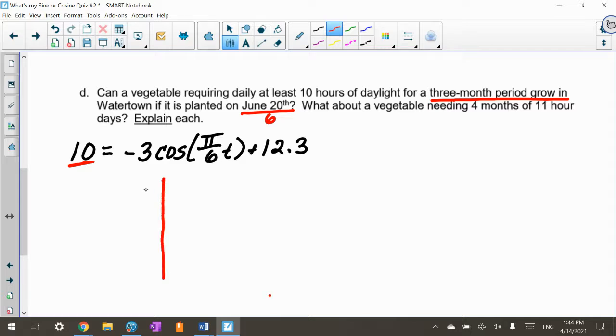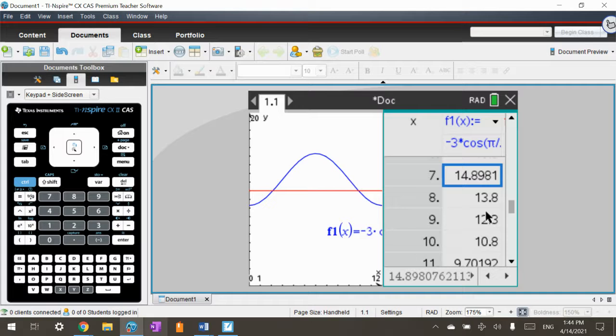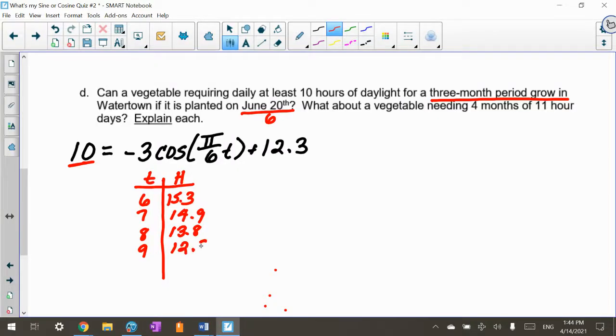If I were doing this on a quiz or a test, I'd want you to just write the table down here. So let's just do the three months they're talking about. Here is my hours of daylight, and here's my time. When it was June 20th, which was 6, there was 15.3 hours of daylight. July, there was 14.9. August, there was 13.8. September was 12.3. Would there be enough daylight if a plant needed 10 hours of daylight? Yes, you would. You'd have enough time because this is June 20th. June to July is one month, two months, three months.